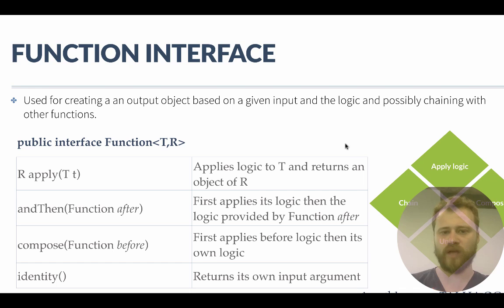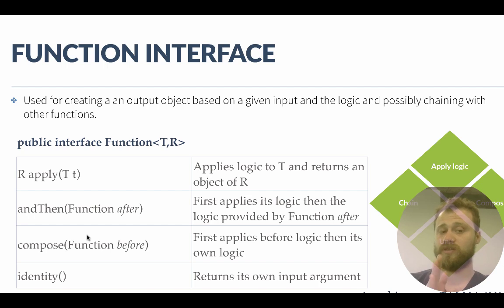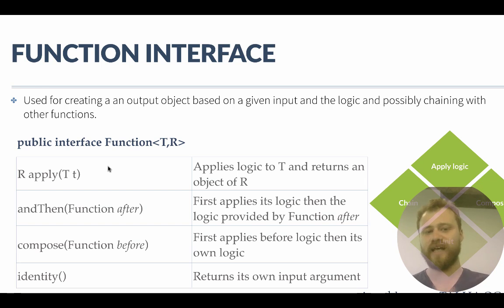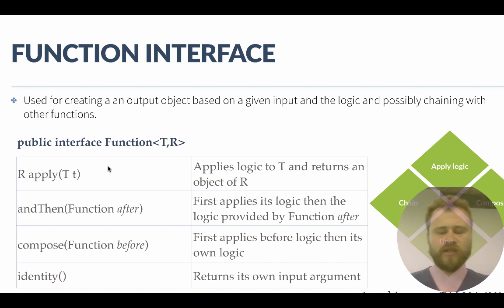The andThen method gets another function reference as a parameter. This introduces a new concept: a function may be passed as an argument to another function. When using andThen, our function's apply method is invoked first, and then the apply method of the 'after' function is invoked automatically. This is how function chaining works.